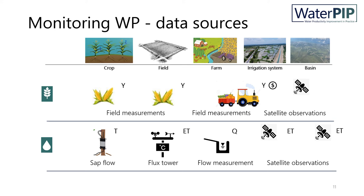Now to the practical side of water productivity assessments and sources of information typically used. For the crop and field scale, data is generally obtained from field measurements — from harvest data for the production component, to sap flow or flux towers to estimate transpiration and evapotranspiration. Since this requires extensive data collection, crop growth models can also be used. At the larger scale, from farm to irrigation scheme, satellite observations are increasingly used not only to provide aggregated production amounts but also to obtain spatial and temporal variations. For the water use components, field observations from direct flow measurements are increasingly being complemented by satellite observations for the evapotranspiration or water use component.